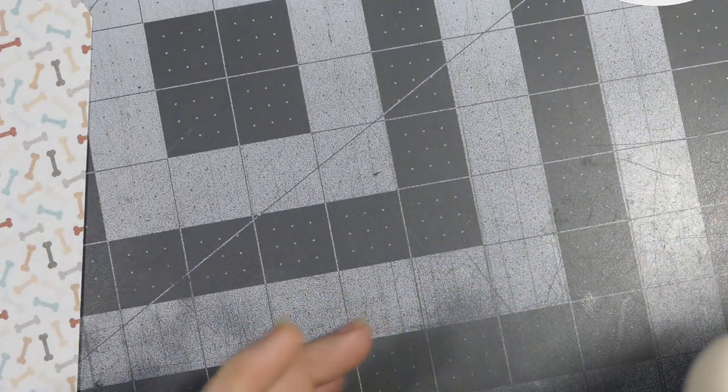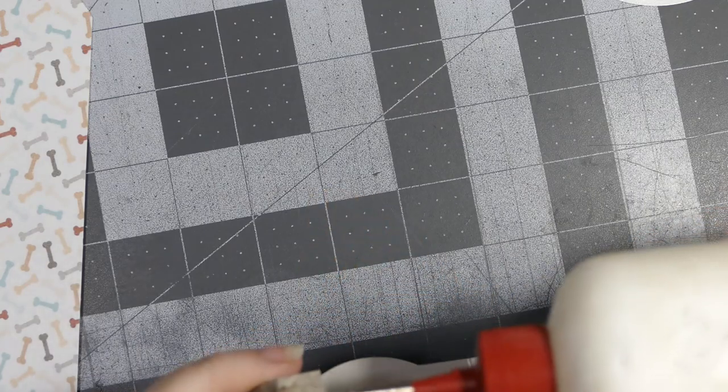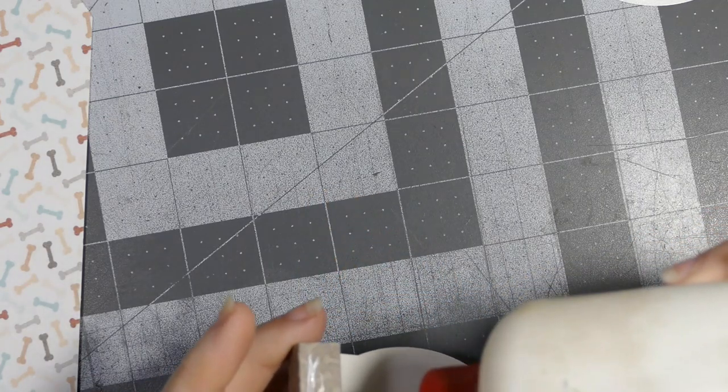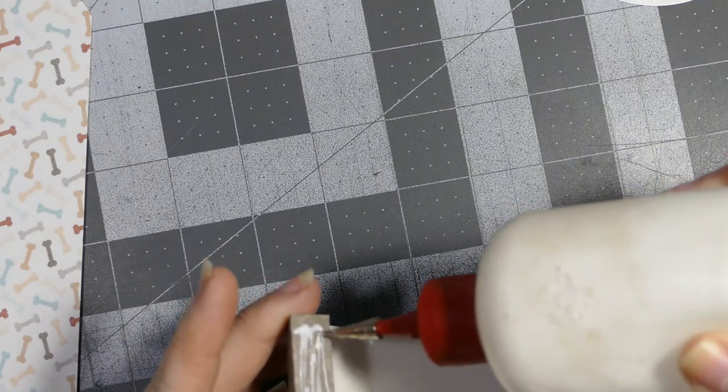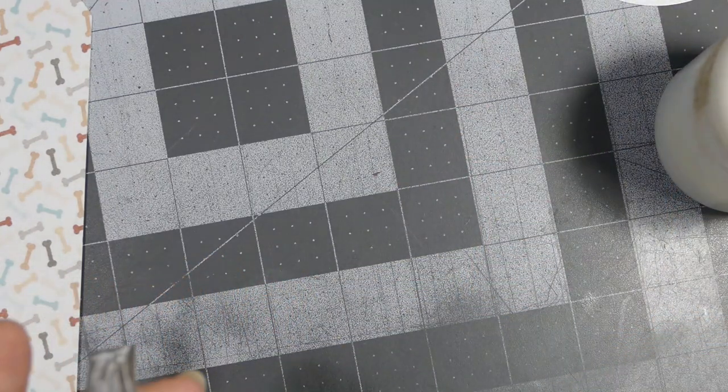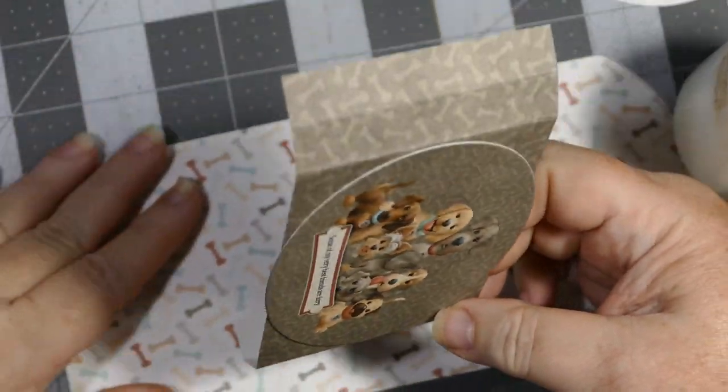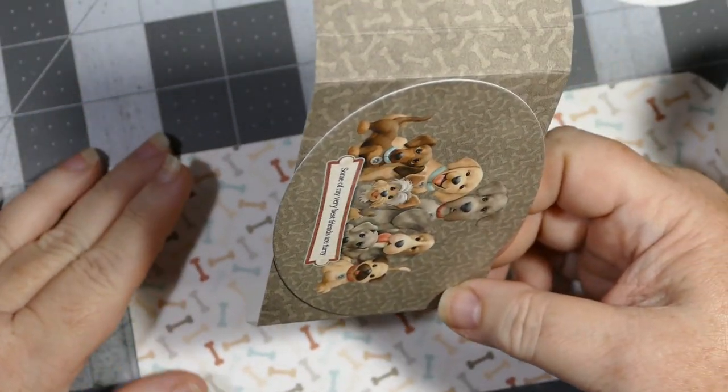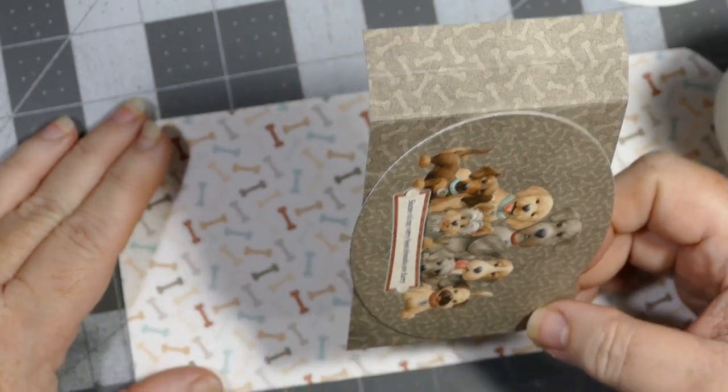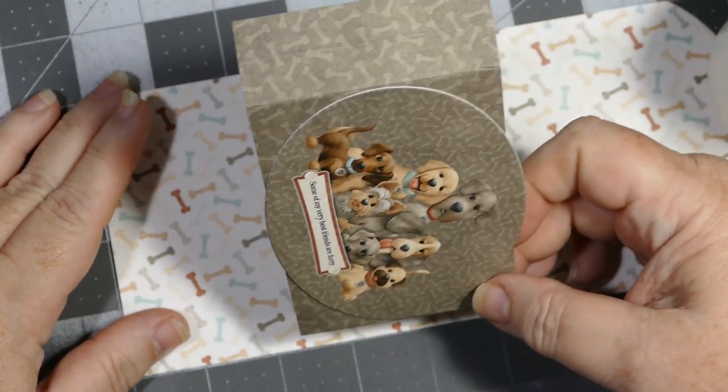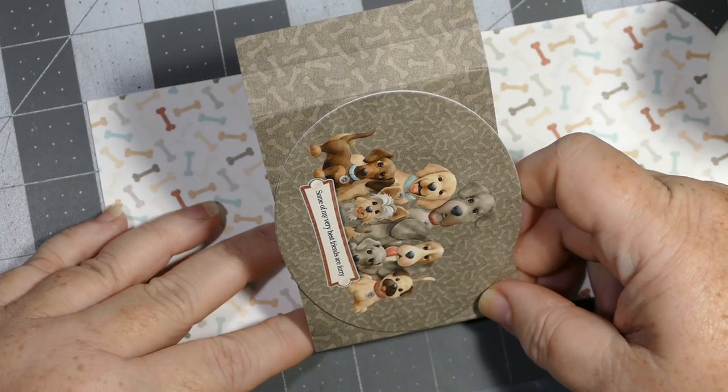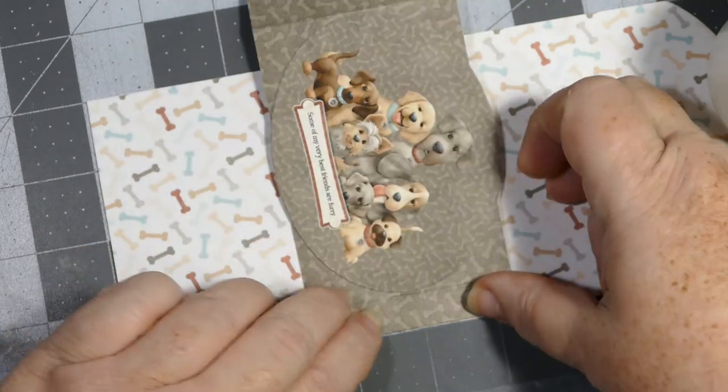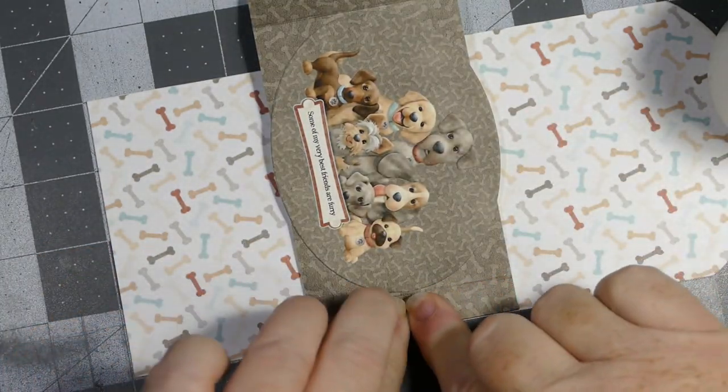We're going to get the glue ready to go on the first flap. Remember I went up two and a half inches from the bottom. Right there would be two and a half inches. I just fold it down and make sure I got a good seal.